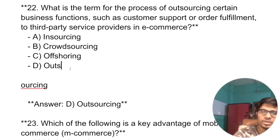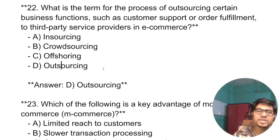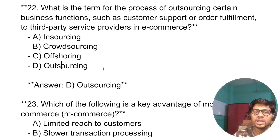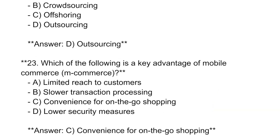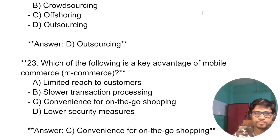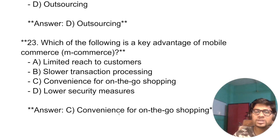What is the term for the process of outsourcing certain business functions, such as customer support and order fulfillment, to a third-party service provider in e-commerce? That is called outsourcing. Which of the following is a key advantage of mobile e-commerce? The key advantage is convenience — the convenience of on-the-go shopping.